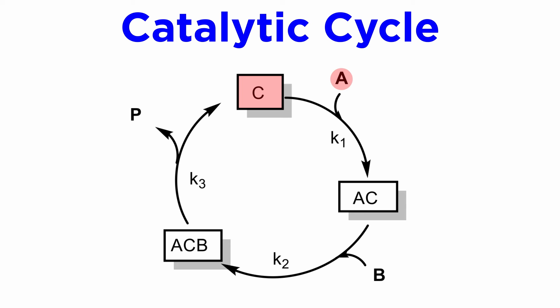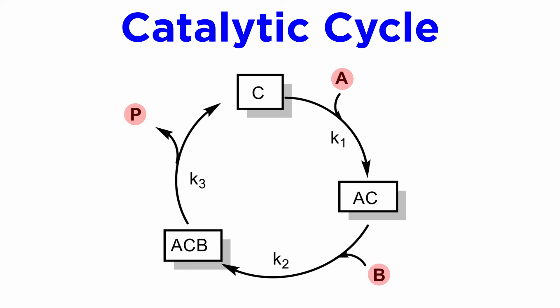Now to get more specific, the reaction of C with A yields intermediate AC, and the rate of this step is associated with a specific kinetic constant K1. This will be followed by reaction of AC with B, forming ACB, which also has a specific kinetic constant K2. Now that A and B have been brought together, they combine to yield P, and in the process they release the original catalyst C, which restarts the cycle, and this reaction has another kinetic constant K3. Note the incoming and outgoing arrows account for molecules that are brought into the cycle and those which leave the cycle.